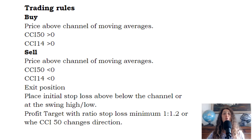Trading rules — Buy: price above the channel moving averages, CCI 50 greater than zero, CCI 14 greater than zero. Sell: price below the channel moving averages, CCI 50 less than zero, CCI 14 less than zero.